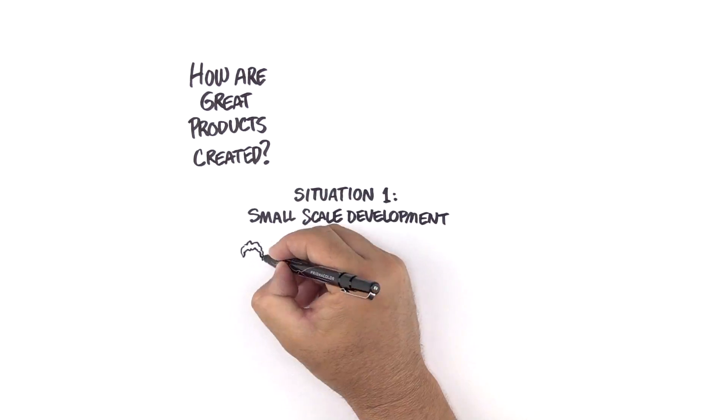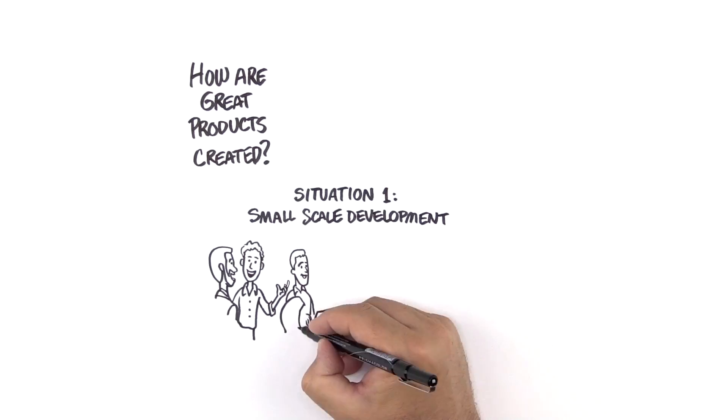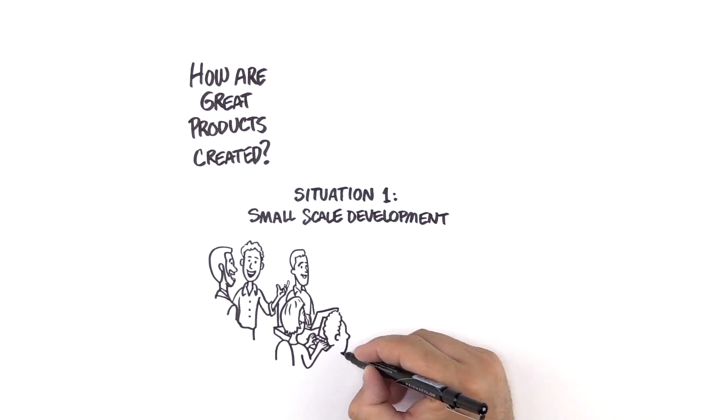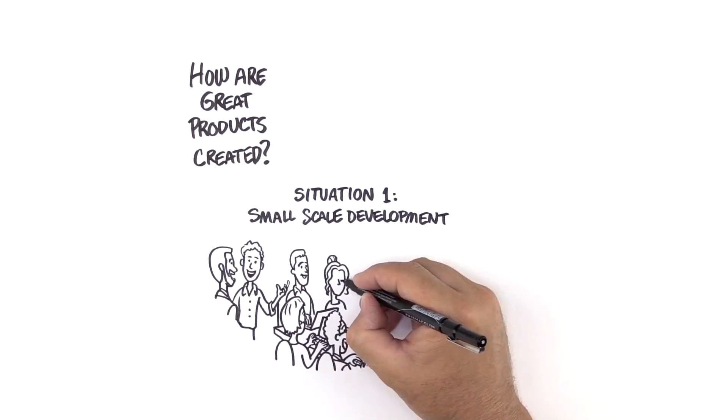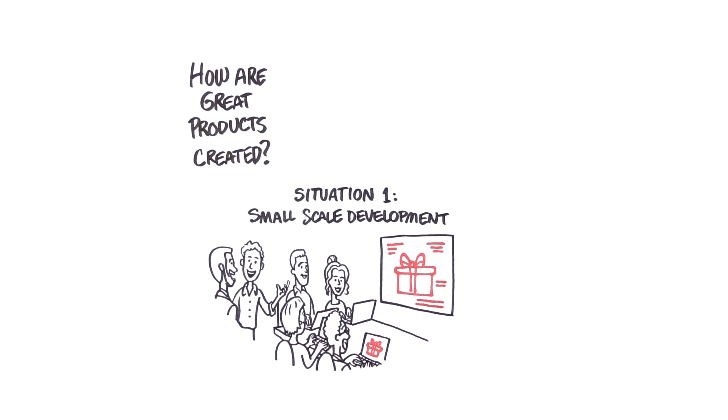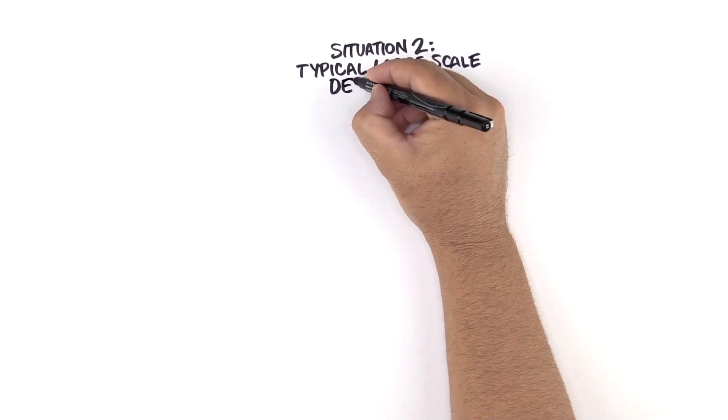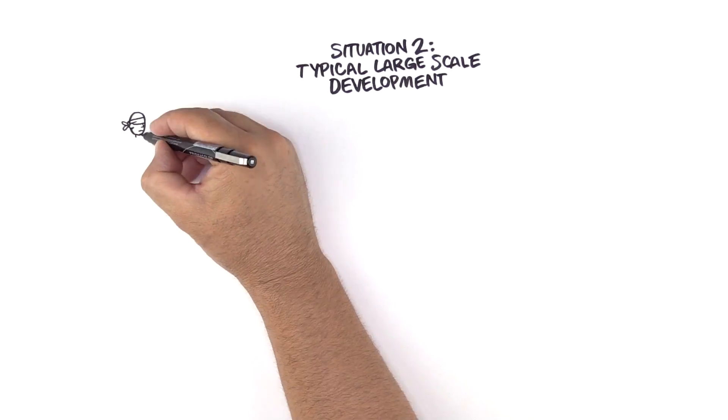How are great products created? To develop a great small product, we'd sit together with our team and the customer, give them a new version every few minutes, and work together on the technology to solve their problems. You already know this is the best way to develop small products. But what usually happens with large product development?